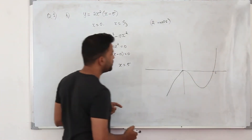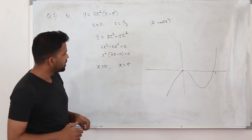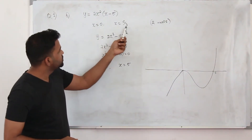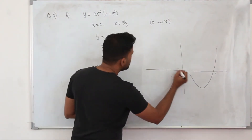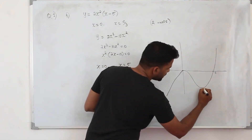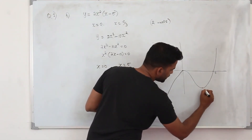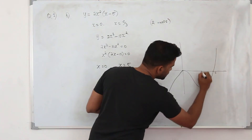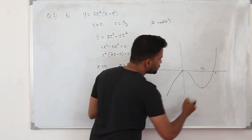This is the given function. It has two turning points: one at x equals 0 and another at x equals 10/3. The graph touches the x-axis at 0 and crosses at 5, with a local maximum near x equals 0 and a local minimum near x equals 10/3.